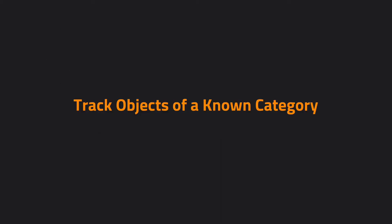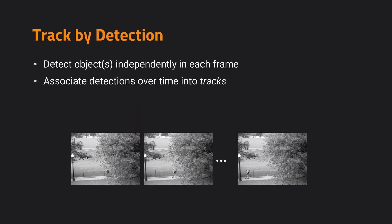Let's switch gears a little bit and consider the case where we are tracking objects of a known category but we do not have an exact template. In this case, we are required to detect objects independently on each frame. This means we may have a general model for the object but not a particular identity for it. For example, I want to detect and track a person within the videos — I just specify that I want to track persons, and there may be many of them.